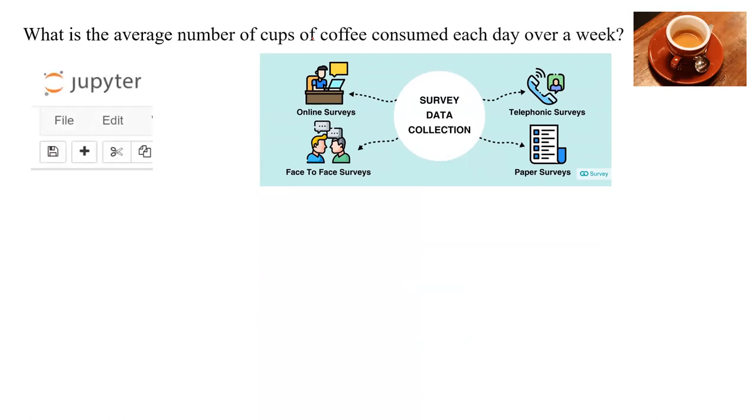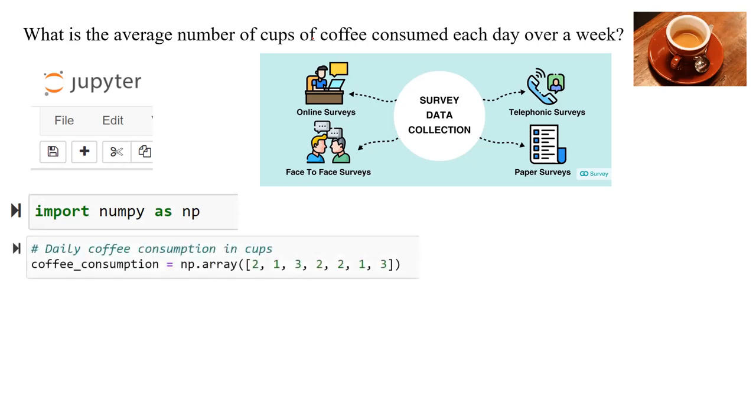After you collected the data, you're going to go to your Jupyter Notebook or Google Colab, and you're going to import NumPy as np. You're going to create a variable called coffee_consumption, and you're going to use np.array to put the list of data into array form.